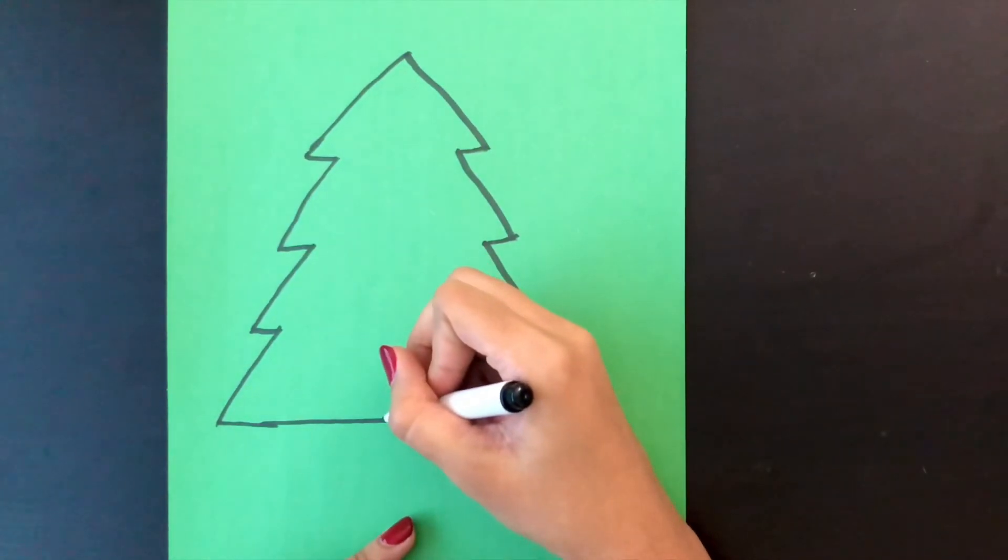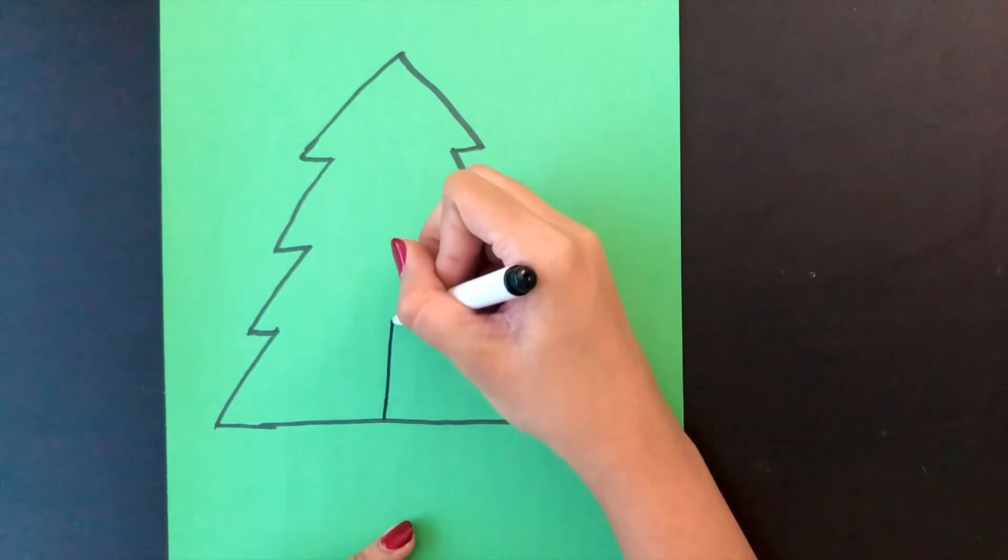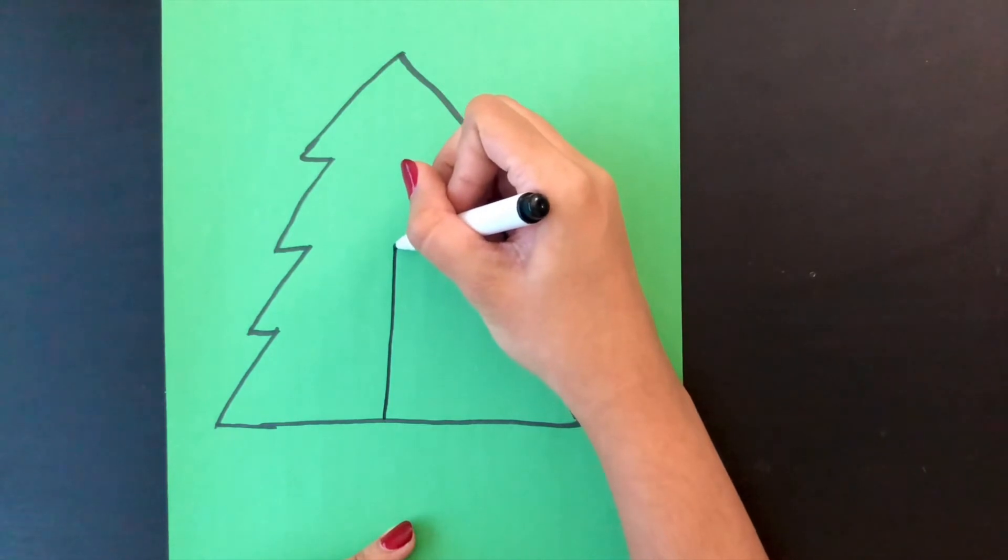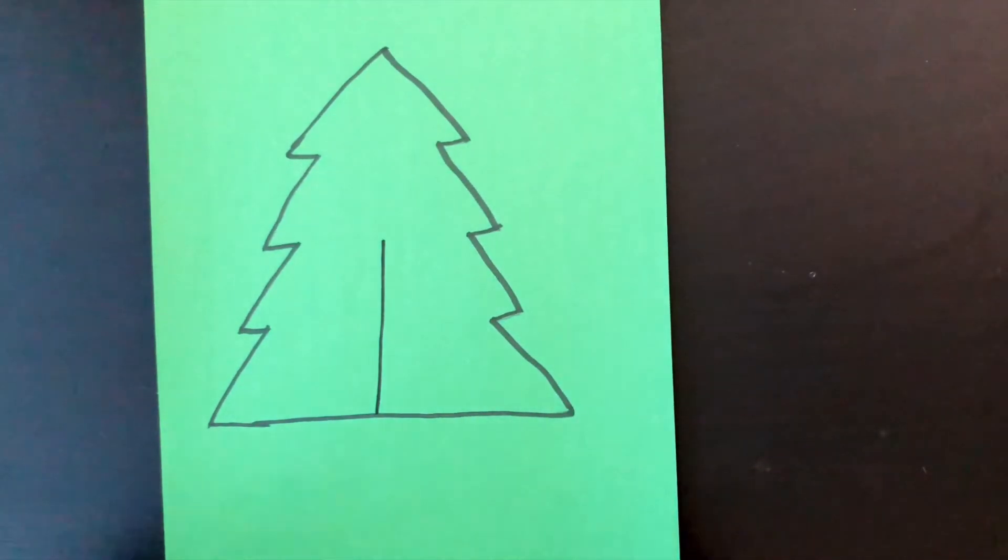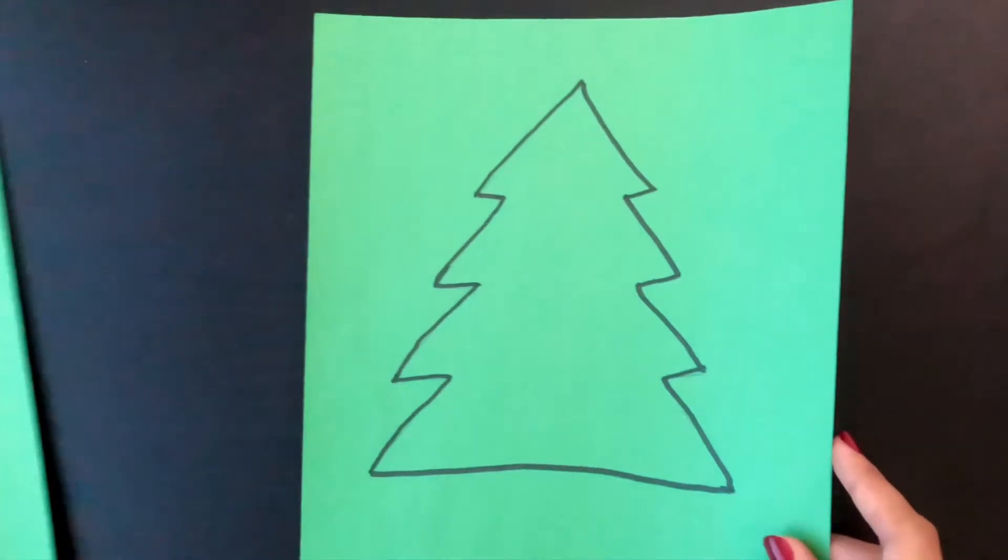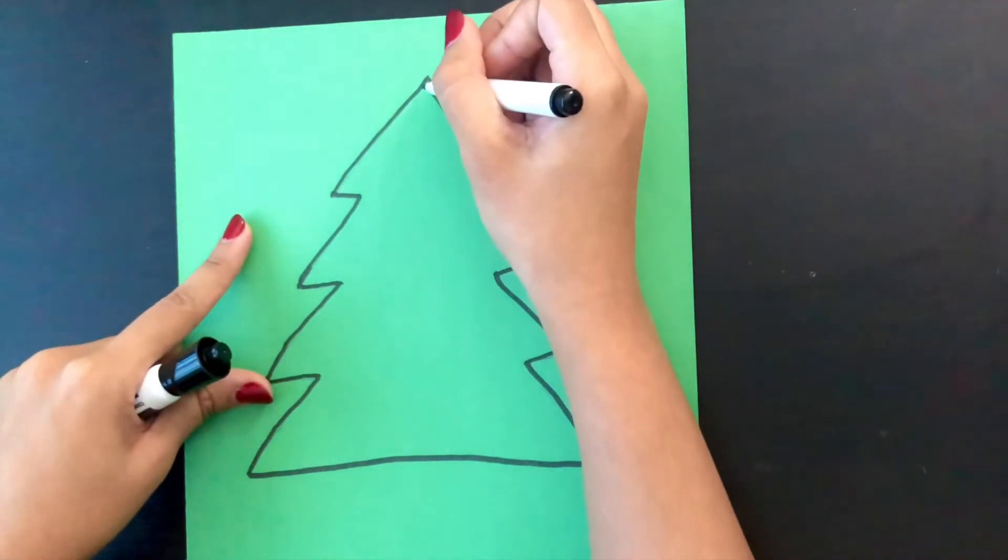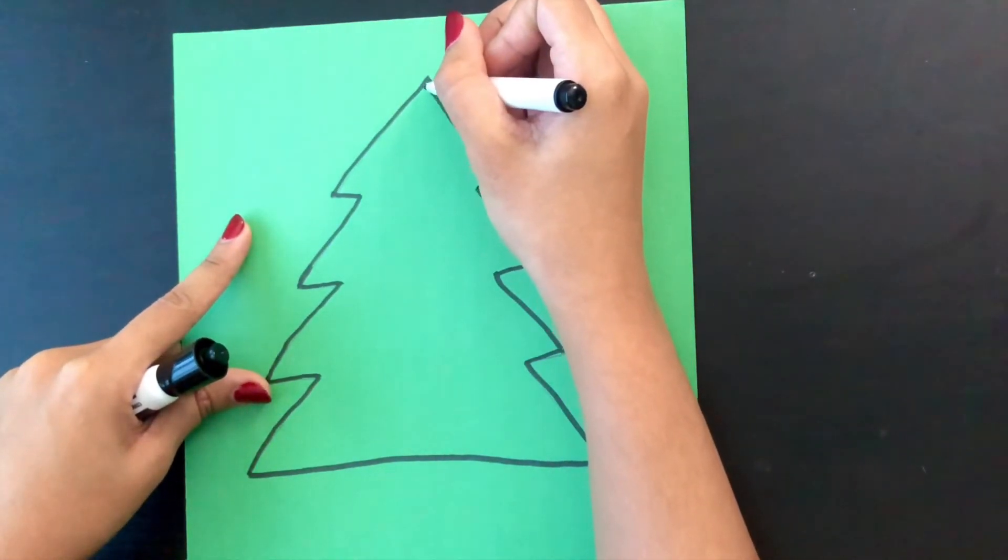Now that we have our trees, draw a black line, like this, from the bottom to the middle. And on the other tree, draw one from the top to the middle.